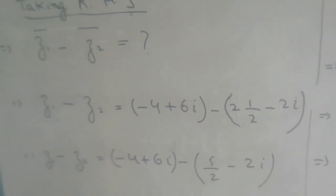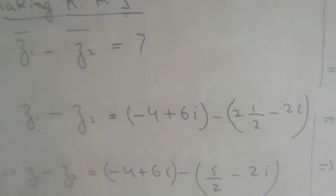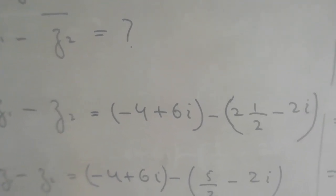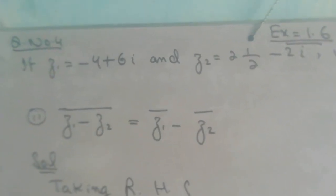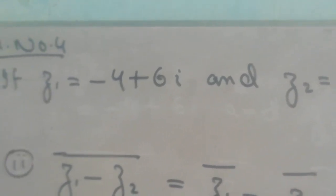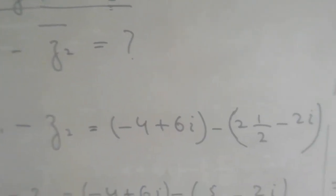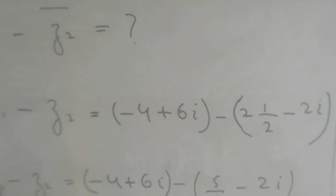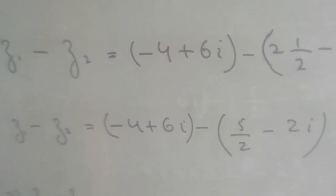Students, the z1 value is minus 4 plus 6 iota, and z2 value is 5 upon 2 minus 2 iota. These are the given values from the question. I put up z1 and z2 here. So conjugate of z1 minus conjugate of z2 means I apply conjugate to minus 4 plus 6 iota, and conjugate to 5 upon 2 minus 2 iota.